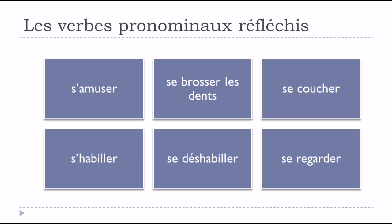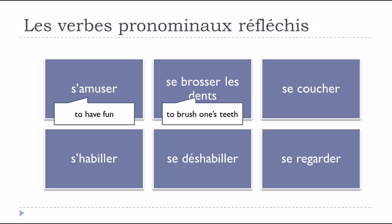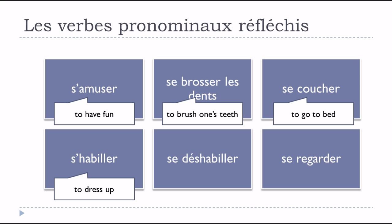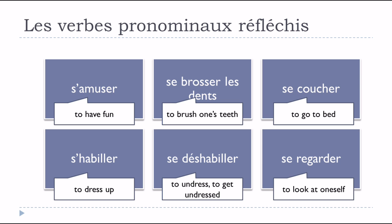More examples with their translations: s'amuser, se brosser les dents, se coucher, s'habiller, se déshabiller, se regarder. Now that you have an idea of what these verbes pronominaux réfléchis are, let's see how we conjugate them, starting with the present tense.